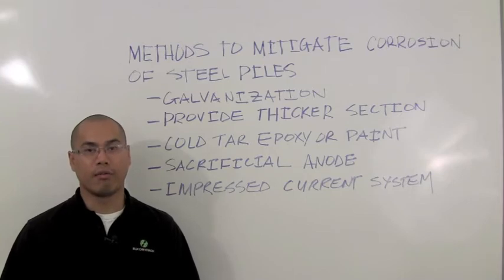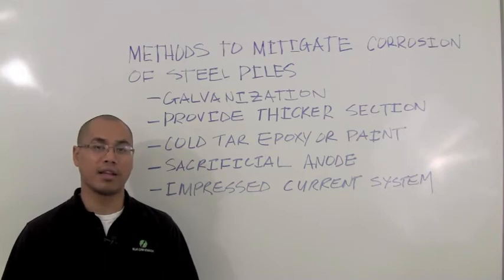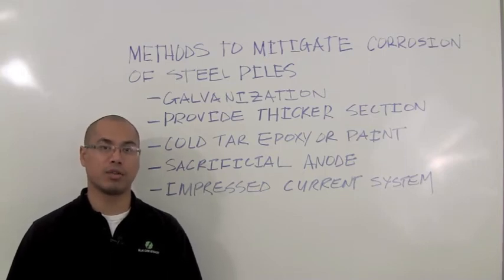However, if 4 mils is not sufficient to protect the steel piles over the life of the system, an additional 4 mils can be added by means of double dipping the steel piles.